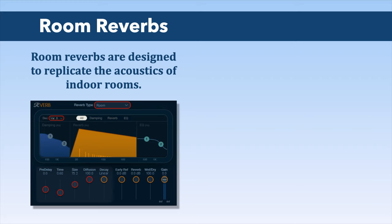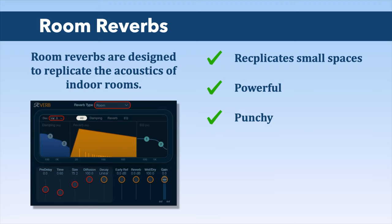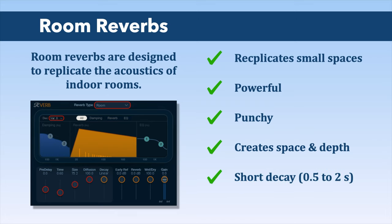Next up: room reverbs. This type is based on the same principle as hall reverbs — replicating the real acoustics of indoor rooms — but the replicated rooms are smaller, denser, more powerful, and punchier. Room reverbs are not made to give air, but rather to create space and depth. The decay time is usually quite short, ranging from 0.5 to 2 seconds for the longest. This type of reverb can be seen as a very lively and organic element while maintaining an intimate feel.